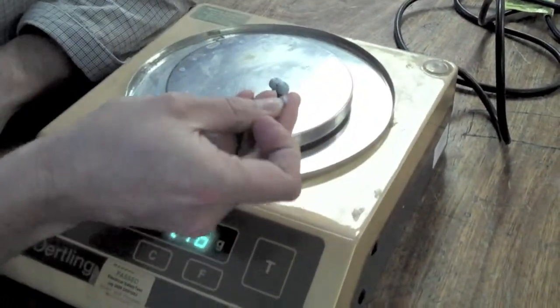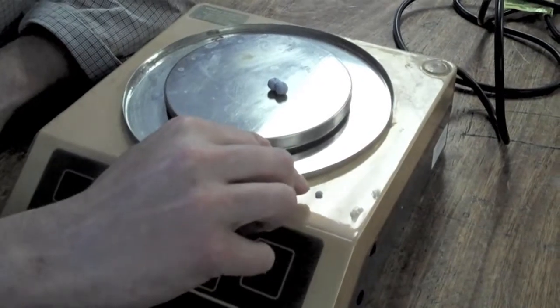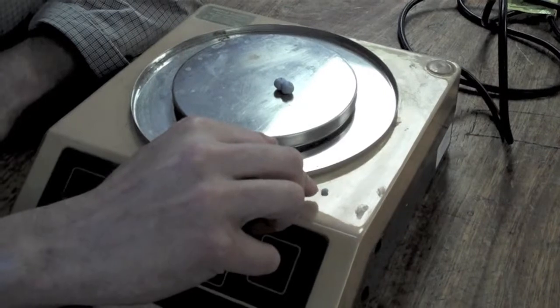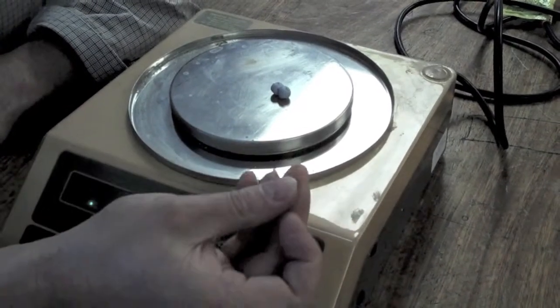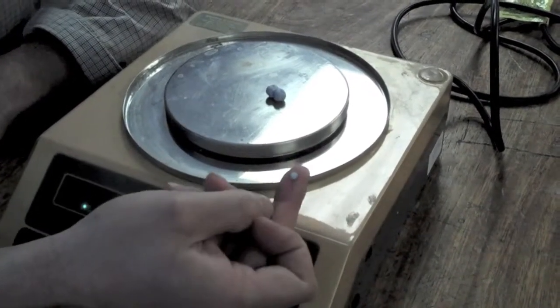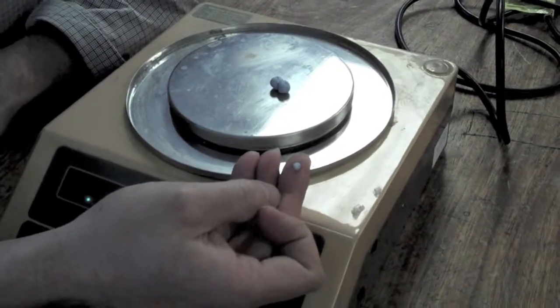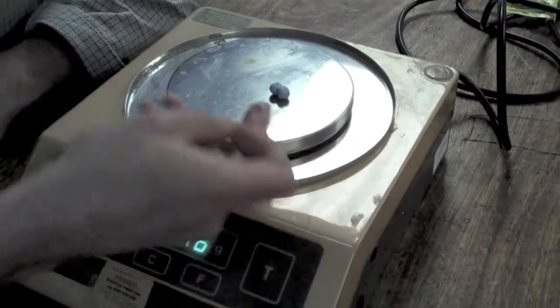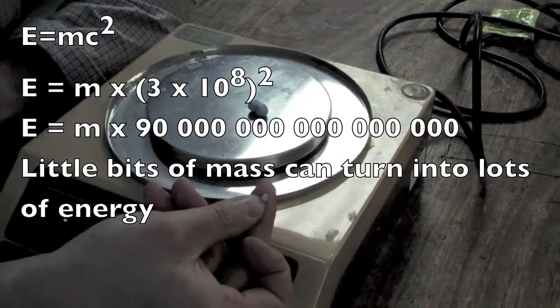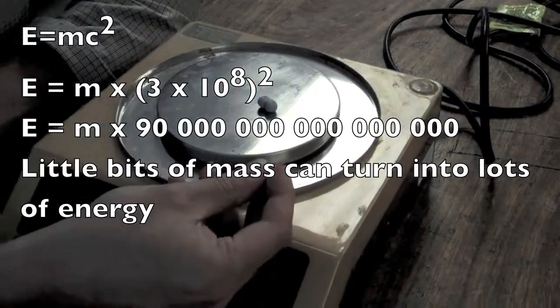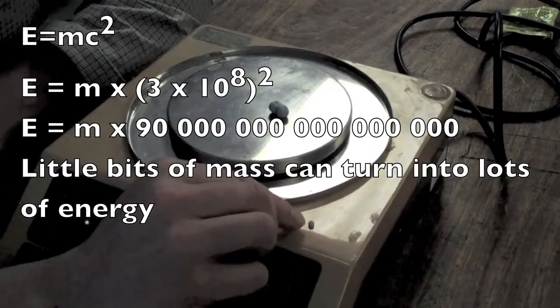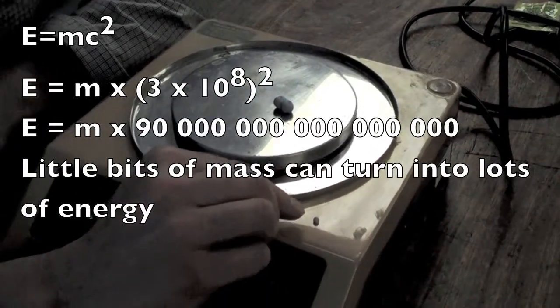And in fact, it's this tiny little bit of mass which goes missing, which provides all of the energy in fusion reactions. And it's a good job that this happens, because otherwise our star, the sun, wouldn't be able to shine and we wouldn't be able to live. But what happens in fusion reactions is they get together, a little bit of the mass goes missing and gets converted with E equals MC squared into a bit of energy. Well, quite a lot of energy.